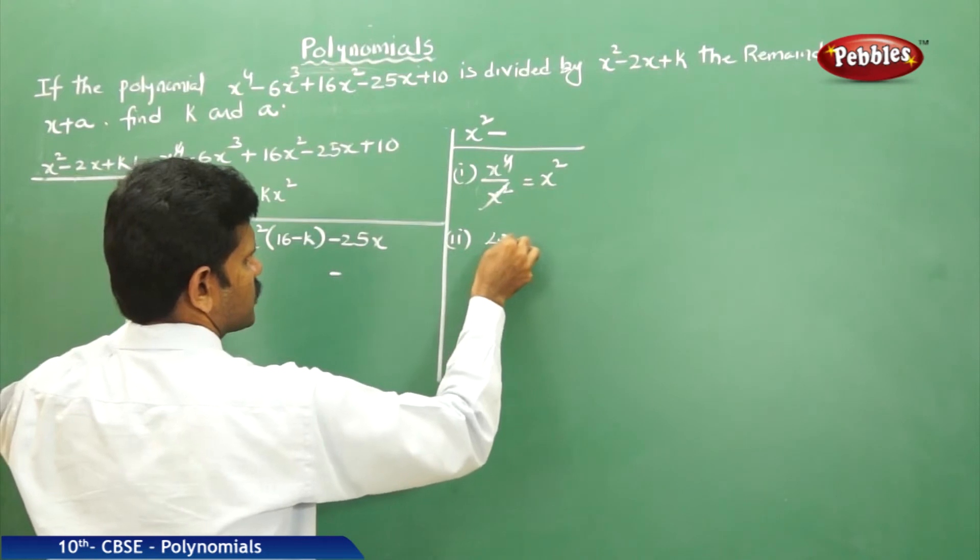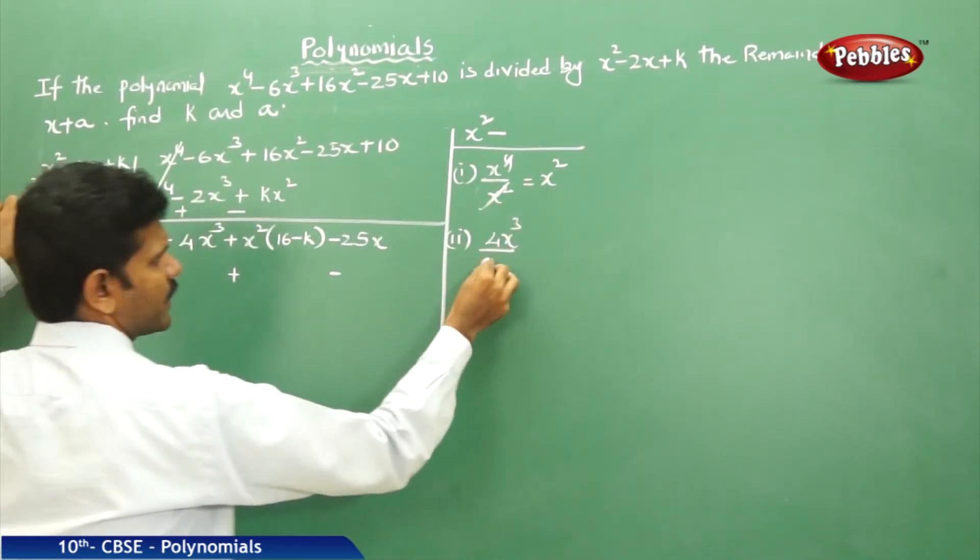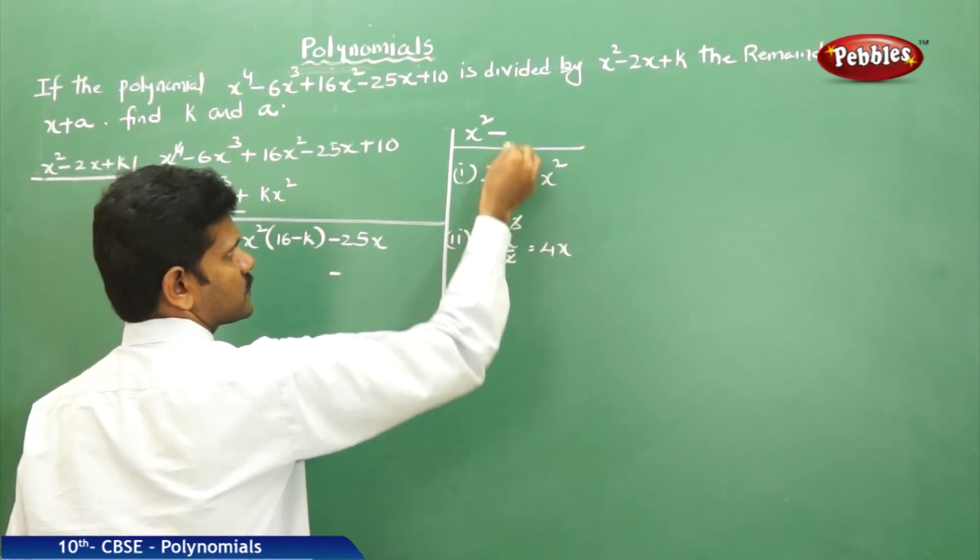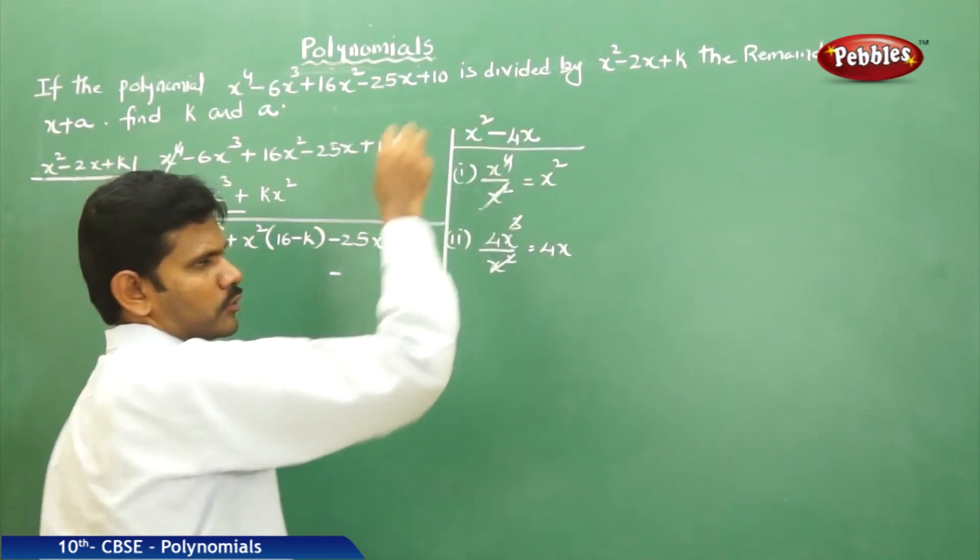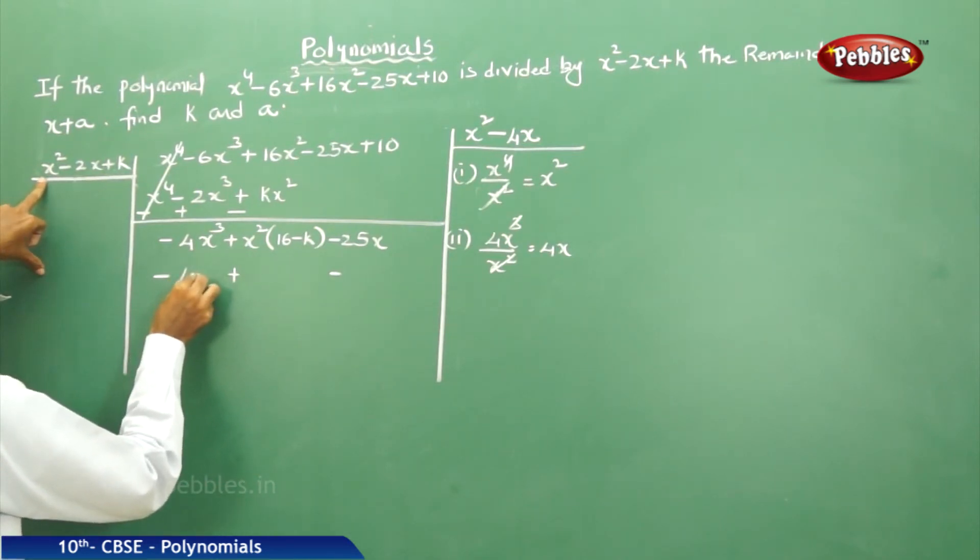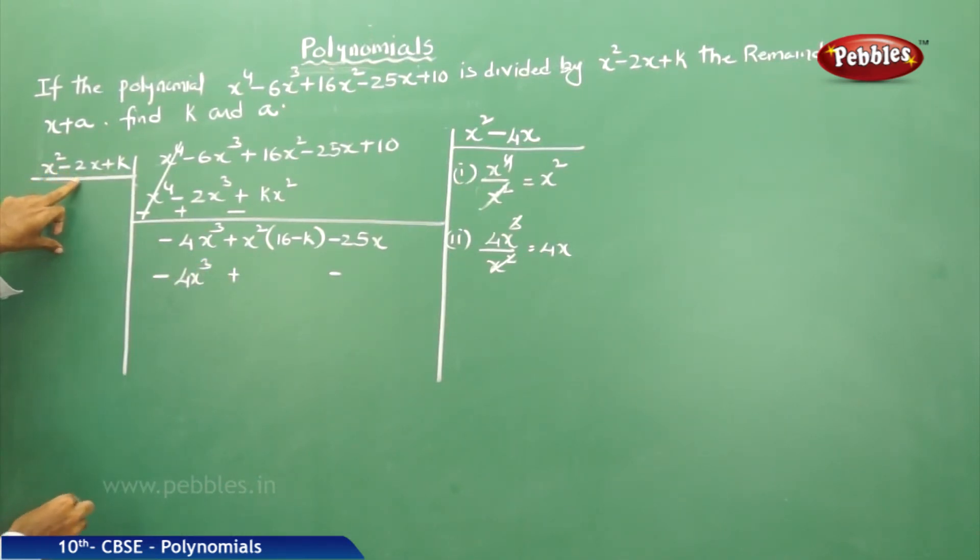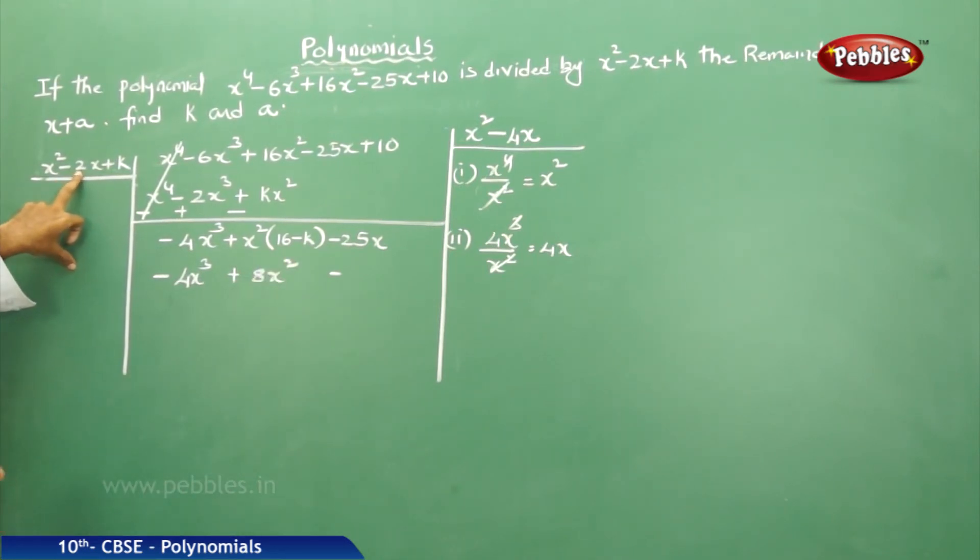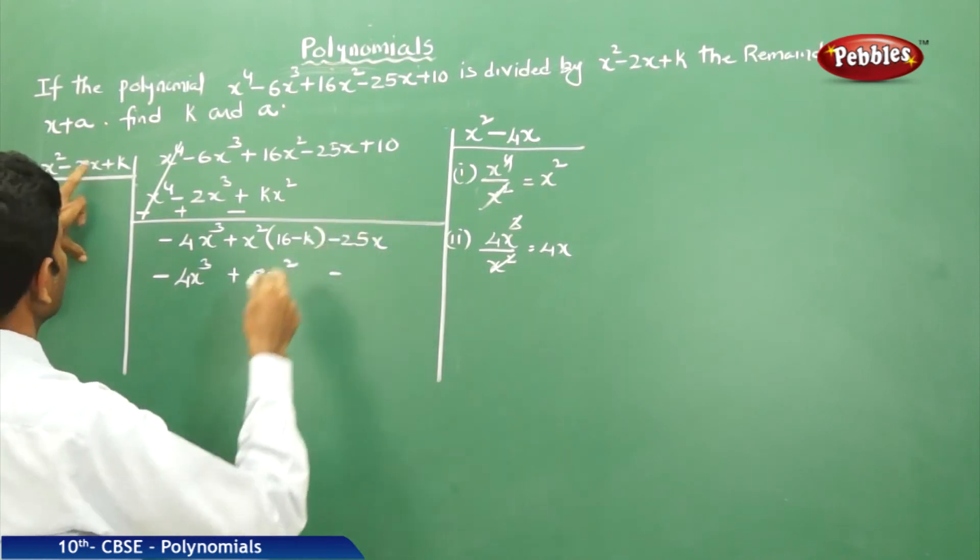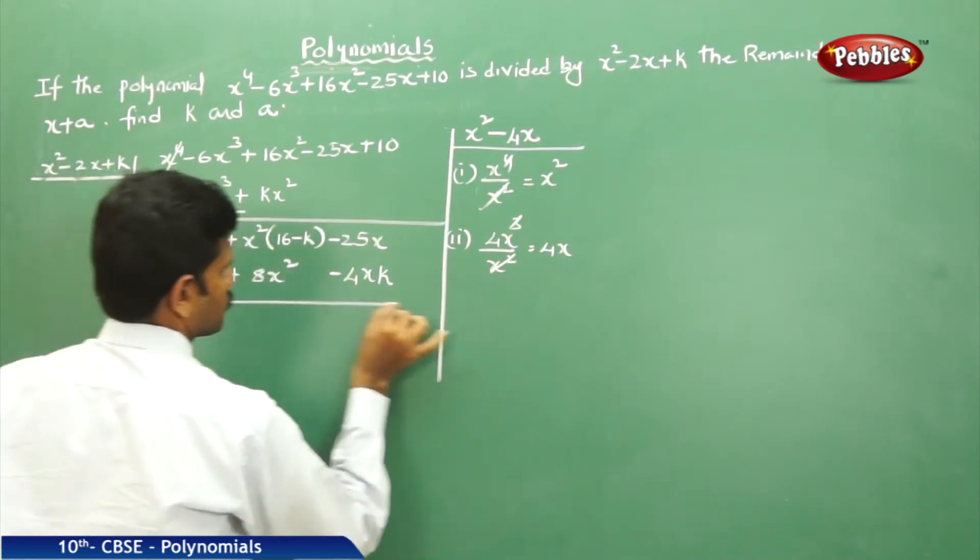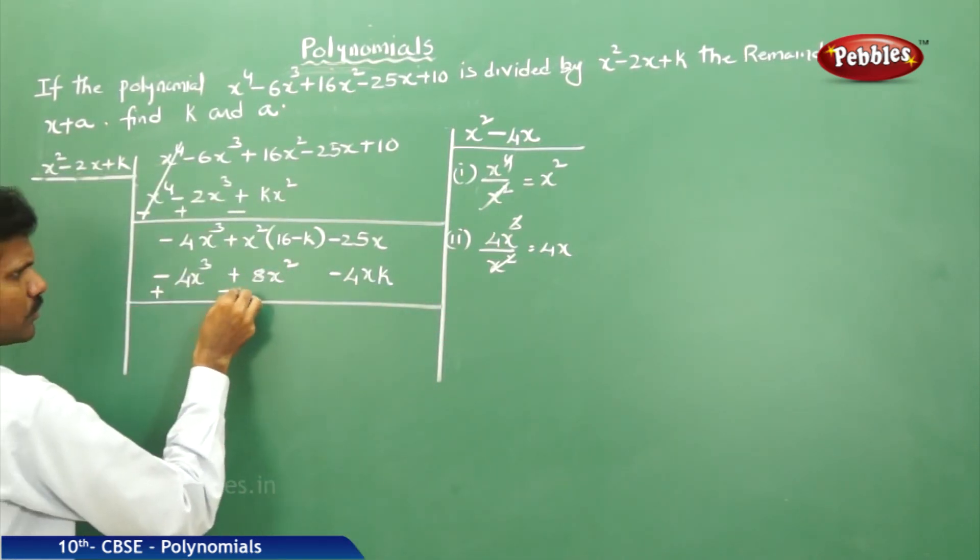Now 4x³ by x², that equals x² cube get cancelled, 4x is left. Now again with this 4x multiply your divisor. 4x into x² gives 4x³. Next, 4 times 2 are 8x². Next, 4x into k gives 4xk. What? Plus, minus, plus.